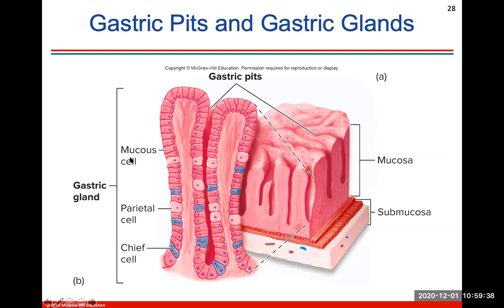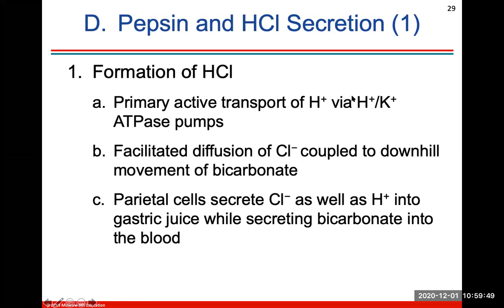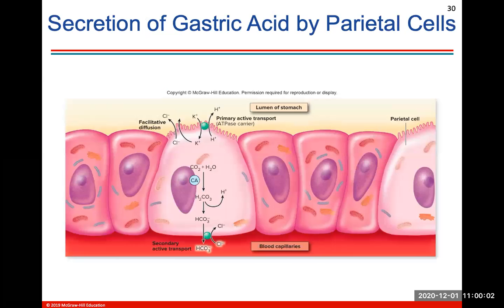I want you to know what each cell type secretes: mucus cells secrete mucus, parietal cells secrete HCl, and chief cells secrete pepsinogen. In order to form HCl, there is primary active transport and facilitated diffusion of chloride. You don't need to know the complete formation of HCl, but know that parietal cells are what secrete this gastric acid, hydrochloric acid.